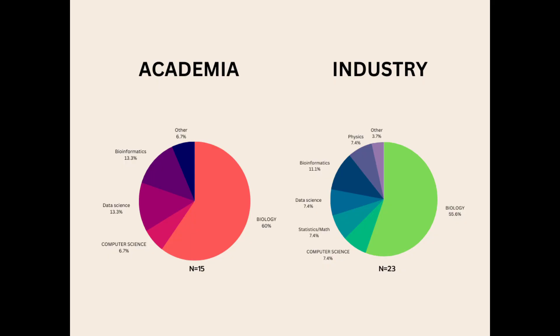I've worked as a bioinformatician in both academia and industry, and I've collected some data on what background the people in those teams came from — specifically their undergraduate bachelor's degree. Comparing the bioinformatics people I've worked with in academia to those in industry, the majority in both groups studied an undergraduate degree in biology or a biology-related subject, such as biochemistry, biotechnology, or molecular biology. For both categories we're getting around 60% of people coming from a biology bachelor's degree, with similar amounts coming from computer science, bioinformatics, data science, and statistical backgrounds.